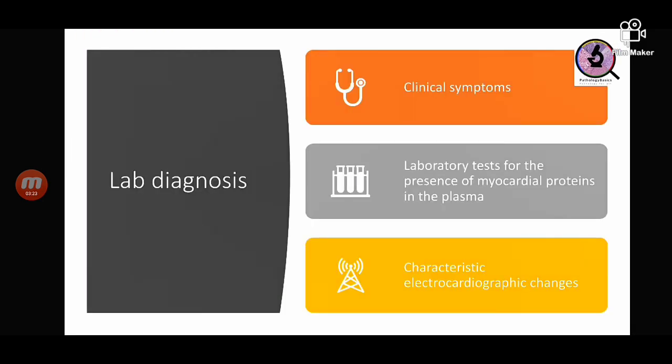Myocardial infarction is diagnosed on the basis of three things: first, typical clinical features — though these are not seen in diabetic patients, in whom we call it a silent infarct; second, laboratory tests detecting myocardial proteins; and third, an ECG.